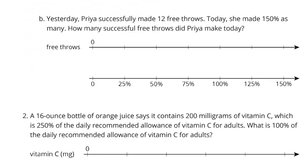Part B: Yesterday Priya successfully made 12 free throws. Today she made 150% as many. How many successful free throws did Priya make today? Once again, let's start off with that 12 free throws being our 100% number. We're going to be looking for this 150% number, but before we do, let's see how our number line is broken into.